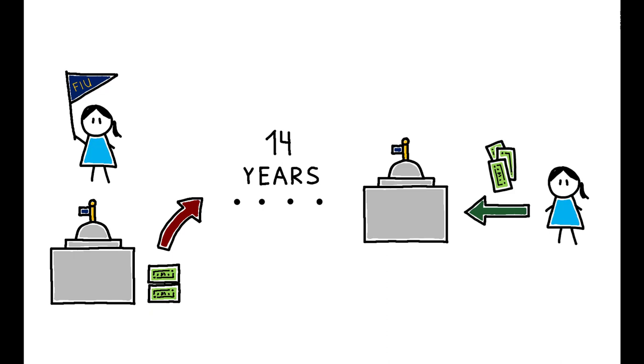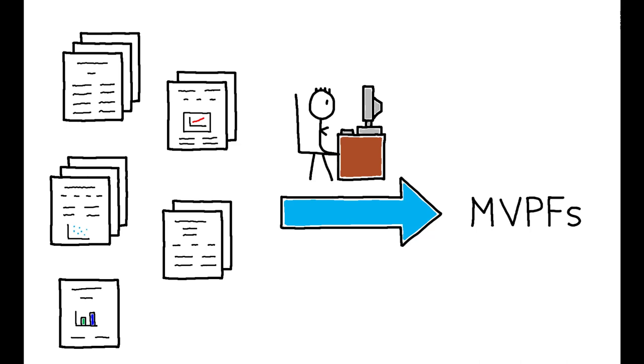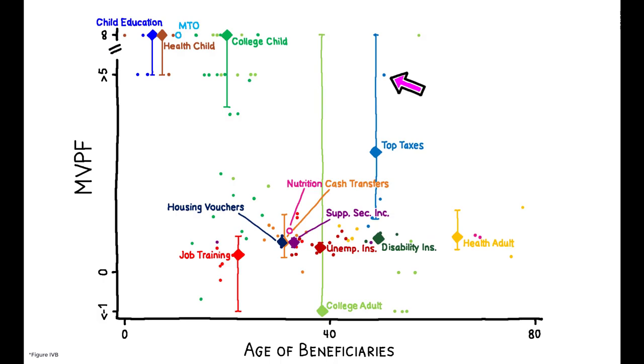The policy pays for itself and the MVPF is infinite. Do we see a similar dynamic in other cases? The authors use the results from existing policy evaluations to systematically calculate the MVPFs of 133 historical policies. This figure shows the results. Each dot represents an individual policy, while diamonds are category averages for each policy type.